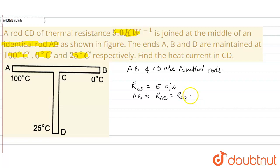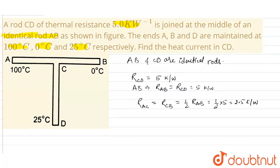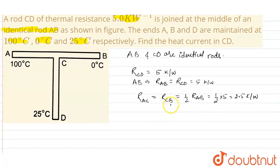Now, the rod CD is joined at the middle of rod AB, so point C on rod AB is at the midpoint. Therefore, the thermal resistance of part AC equals the thermal resistance of part CB, which equals half the thermal resistance of rod AB — that is, half of 5, which gives us 2.5 kelvin per watt.